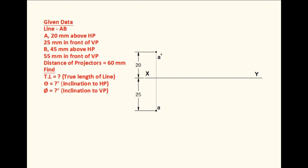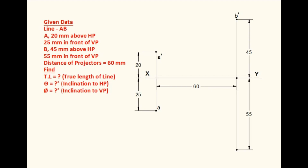Mark the projector of B on the XY line. This point is 60mm away from the projector of point A because the distance between projectors is 60mm. The other endpoint B is 45mm above HP, so its elevation will be 45mm above the XY line. Name it as B dash. Plan of B is 55mm below the XY line because B is 55mm in front of VP. Name that point as B. When we join A dash and B dash, it is the elevation of the line AB. When we join A and B, it is the plan of the line AB.